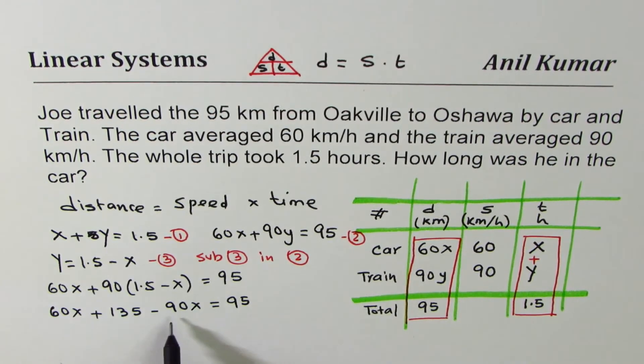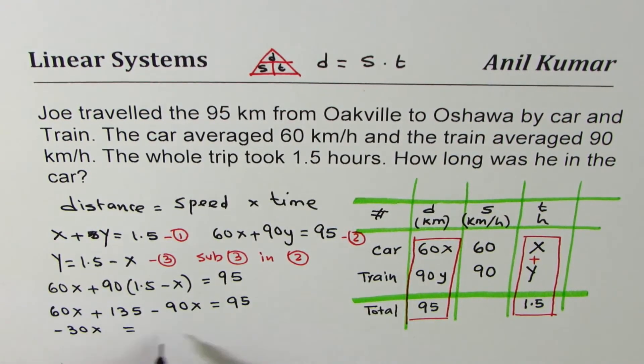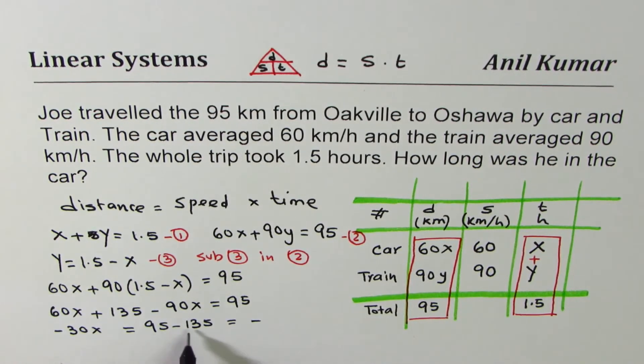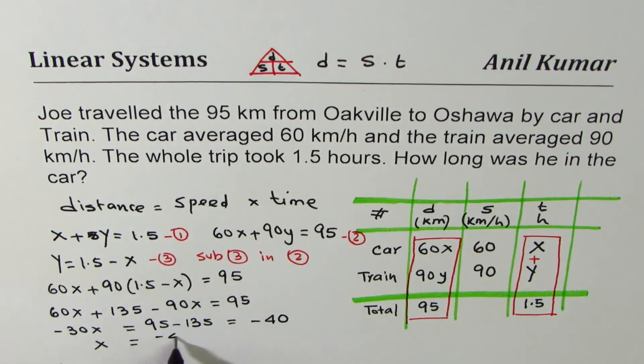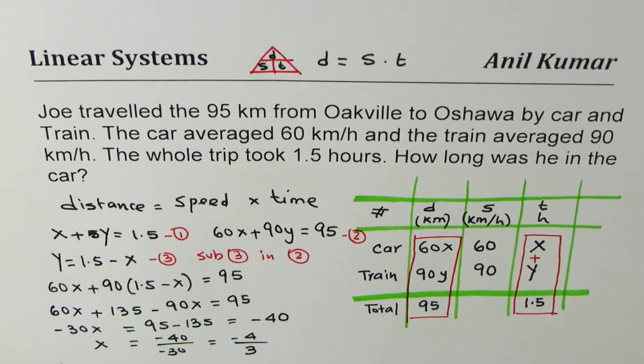Now we can solve 60 minus 90 is minus 30x equal to 95 minus 135, which is minus, when you take away, this number is bigger, negative number, 5 take away 5 is 0, 13 take away 9 is 4, so we get 40. And therefore, x is equal to minus 40 over minus 30. And that is 4 over 3.